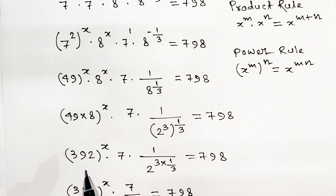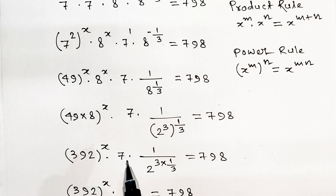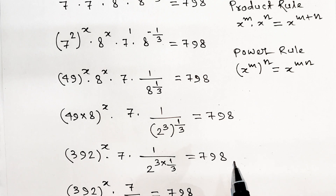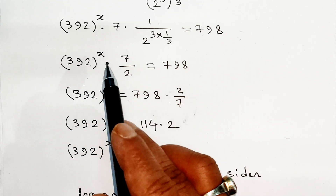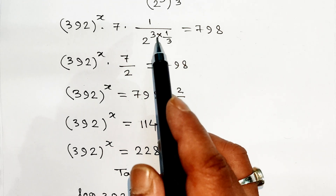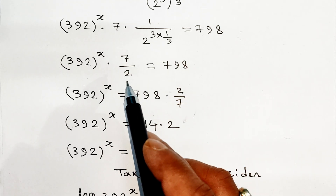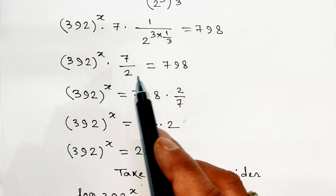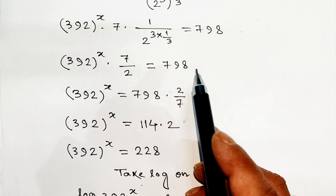49 into 8 equals 392, so 392 to the power x, into 7, into 1 divided by 2 to the power 3 into 1 divided by 3, equals 7.98. Simplifying: 392 to the power x into 7 divided by 2 equals 7.98.